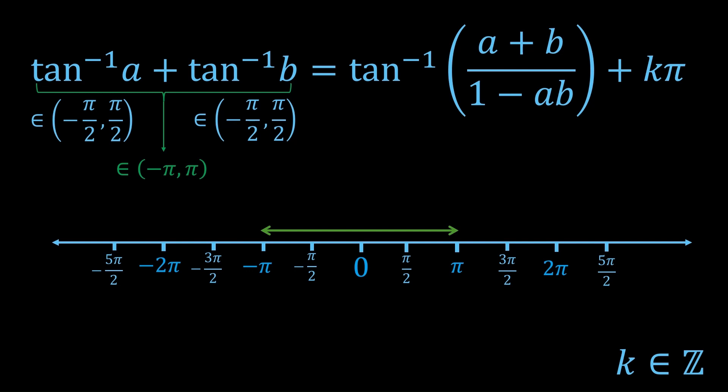So I'm going to let this green arrow represent all possible values of the left hand side. How about the right hand side?